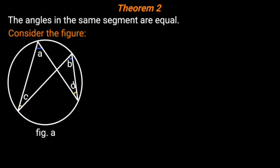Circle geometry, Theorem 2: The angles in the same segments are equal. Consider the figure below. The angle at A is equal to the angle at B because both of them are in the same segment. The angle at C is equal to the angle at D because both of them are in the same segment.